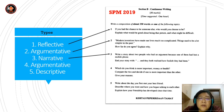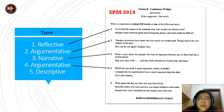Next, which do you think is more important — money or health? Compare the two and decide if one is more important than the other. Give your reasons. So this is argumentative. And lastly, write about the day you first met your best friend. Describe where you were and how you began talking to each other. Explain how your friendship has developed since that time. So this is descriptive and also narrative.